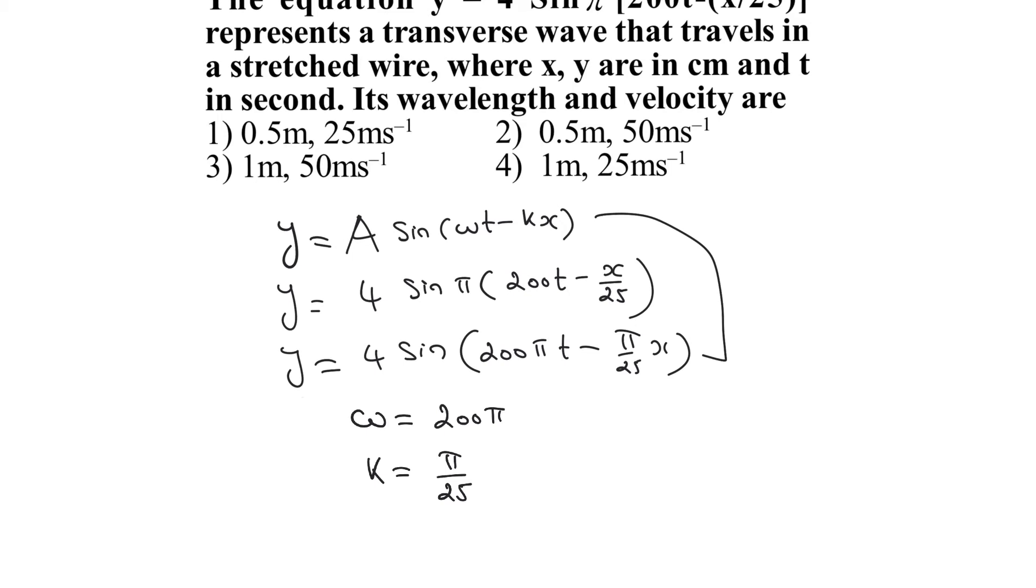To find the wavelength, we use k = 2π/λ. Substituting k = π/25, we get π/25 = 2π/λ. Canceling π, we get λ = 50. Since all values are in centimeters, this is 50 cm or 0.5 m.